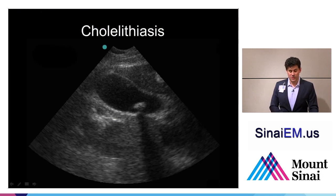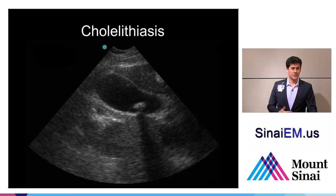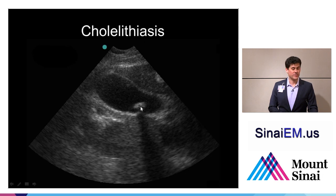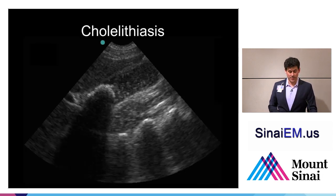What does cholelithiasis look like? Stones are very dense structures, and the density change between the bright density of the stone and the anechoic area of the surrounding bile is going to create a shadow. The ultrasound beam encounters soft tissue, then fluid, and then all of a sudden a bright echoic area that causes shadowing down. So you can look for the bright areas, the shadows coming down from them, or both — that's going to be a sign that there's a stone inside the gallbladder.